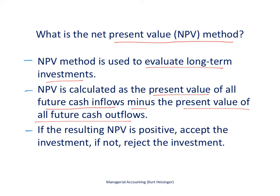If the resulting NPV is positive — that is, once we take the present value of those future cash inflows minus the present value of those future cash outflows and subtract one from the other — then we accept the investment. For example, if we were considering building a production facility, we would go ahead and do that. And if the net present value is not positive, then we reject the investment.